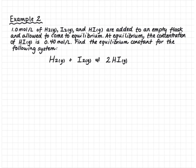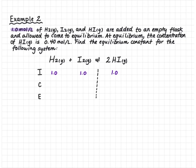We start by writing ICE down the side to form our ICE table. From the question, we have 1 mole per liter initially of hydrogen, iodine, and HI, so we fill in initial concentrations for all three species. The next piece of information is the equilibrium concentration of hydrogen iodide: 0.40 moles per liter. We know the change equals equilibrium concentration minus initial concentration.